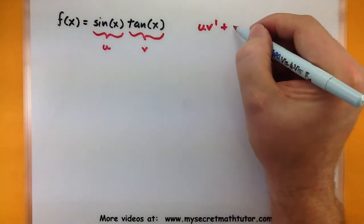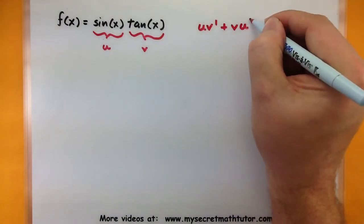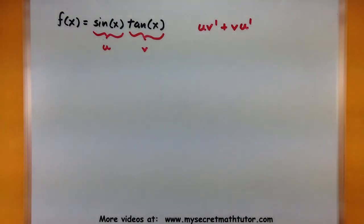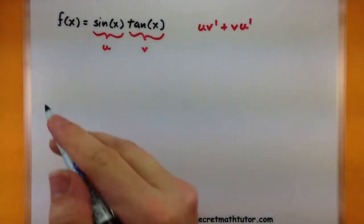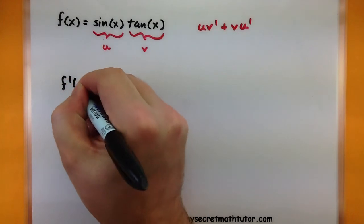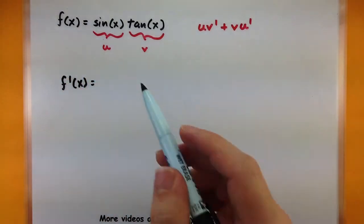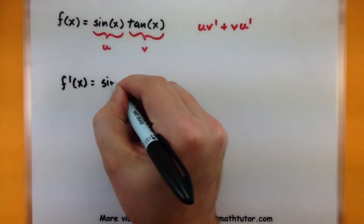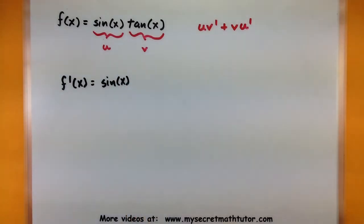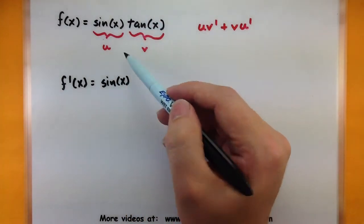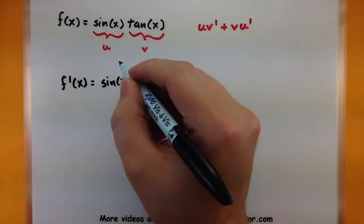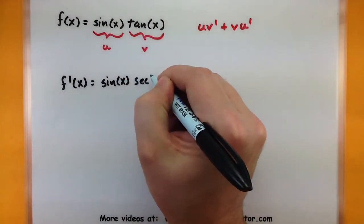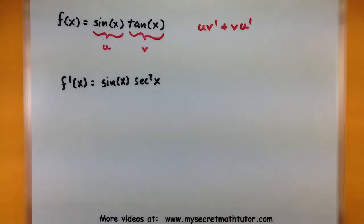So the first one times the derivative of the second and the second times the derivative of the first. Let's see what we can do. So the derivative of this function would start off with our first function, which is simply sine of x. Now we need to take the derivative of the second function. We'll borrow our new rule. So this is secant squared of x. That looks pretty good.